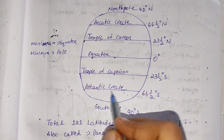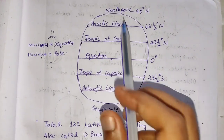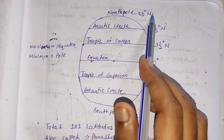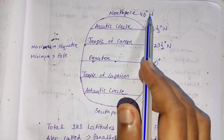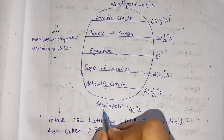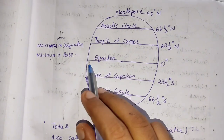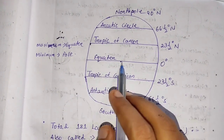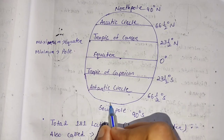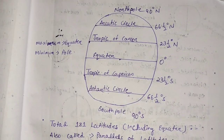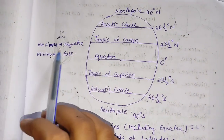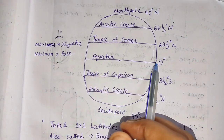90 degree north is the North Pole and 90 degree south is the South Pole. The highest temperature is at the equatorial region and the lowest is at the North Pole. The maximum is equatorial.